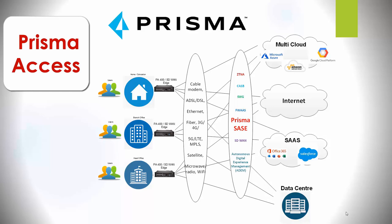SASE is a general term created by Gartner, which converges networking technology with network security services — networking and security converged together. The networking part includes things like SD-WAN, WAN optimization, and quality of service, while the security services include SWG, CASB, ZTNA, Firewall as a Service, etc. Prisma Access sits in the middle of everything, allowing everything to be inspected, so users can connect to Prisma Access to safely access all of the services they need.